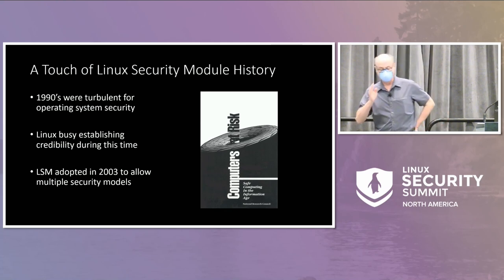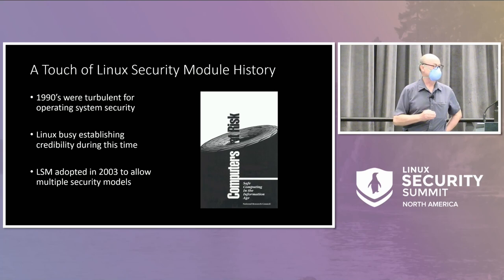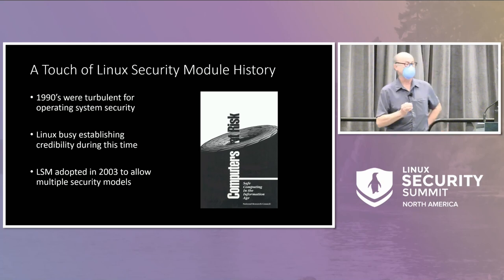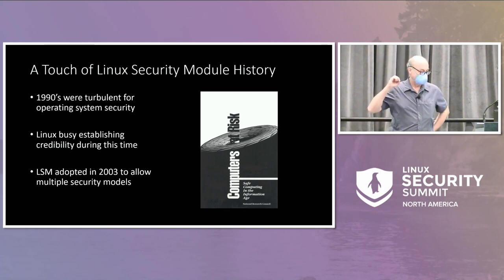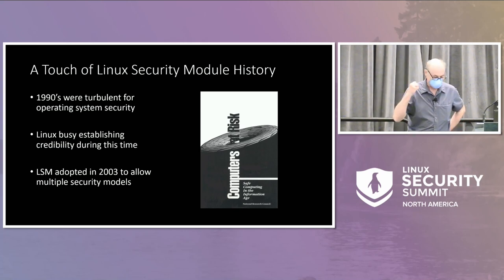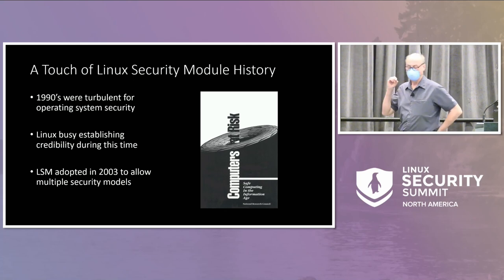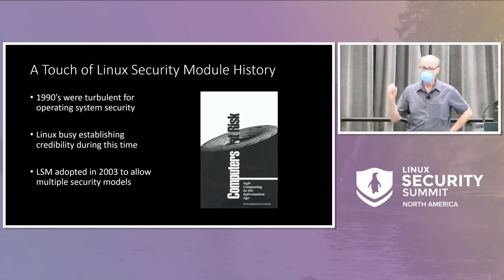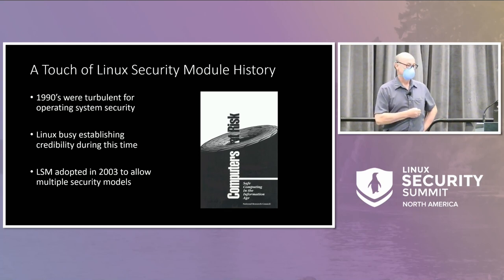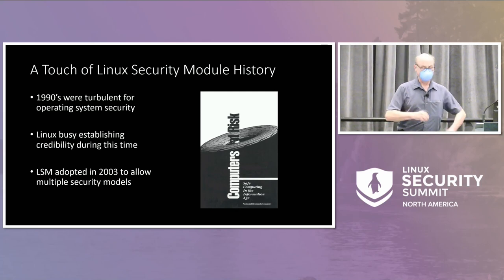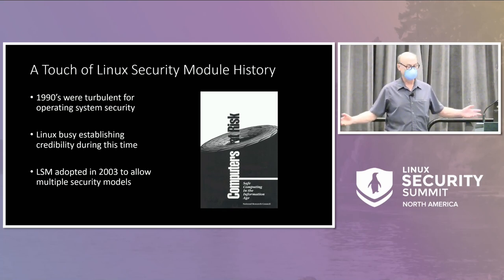In the mid-80s, President Reagan introduced an executive order that said all US government computer systems had to have a particular level of security and be evaluated by the National Security Agency by 1992. It was called C2 in 92. All the Unix vendors went out and crazily implemented features to meet these standards, spending millions of dollars doing this. And then 1992 came and the government said, eh, we don't really care about that. So there was a lot of turbulence — a lot of people had done a lot of work on security and lost their funding.